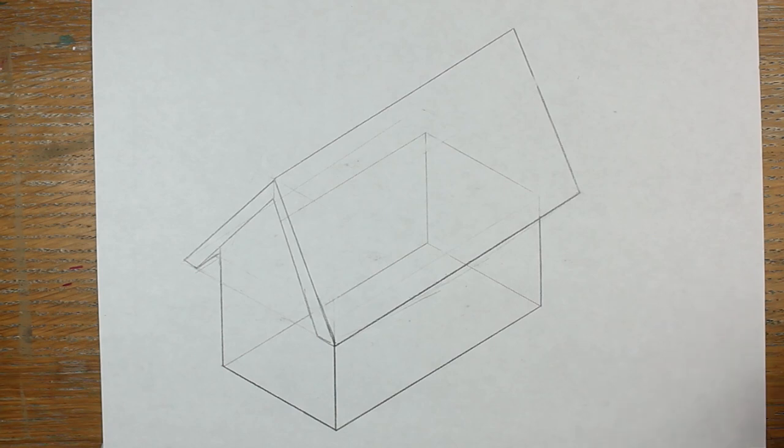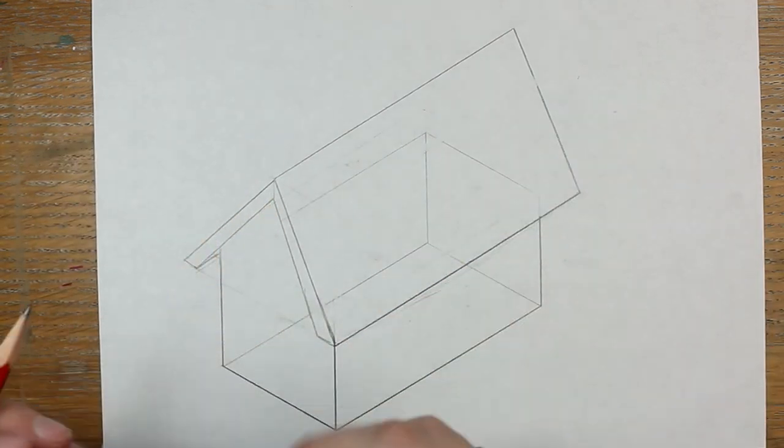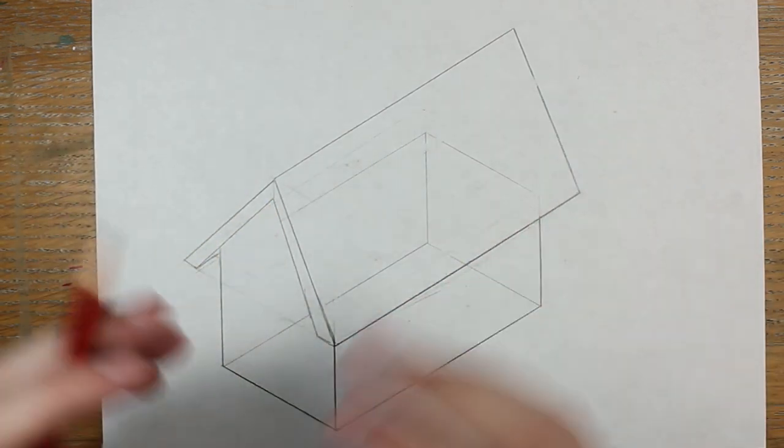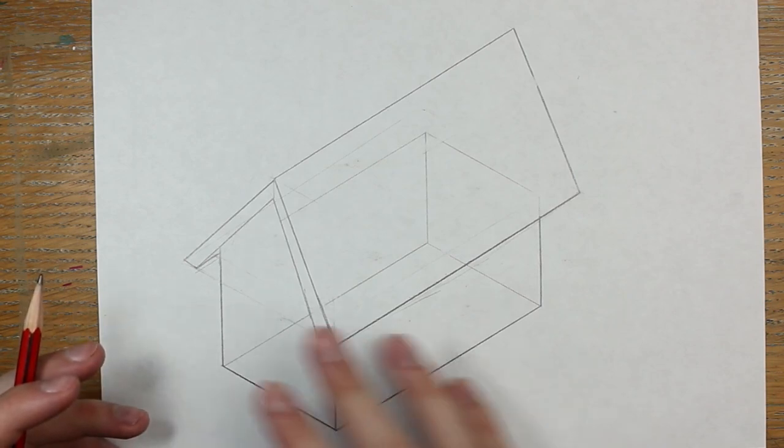As you can see, using these construction lines helps us to make sure that our diagonal lines are accurate. Curves are just as easy as diagonal lines. So, I think I'll add a nice big window, like this one here.